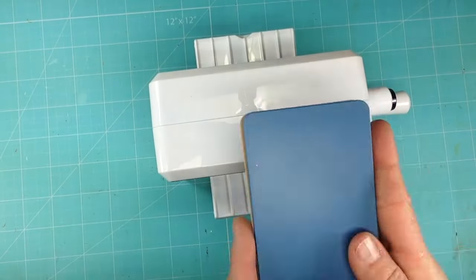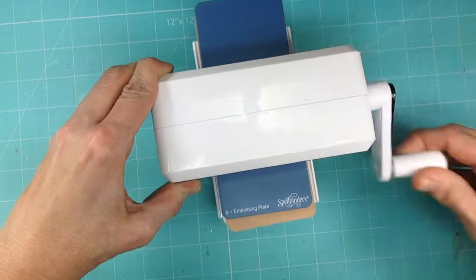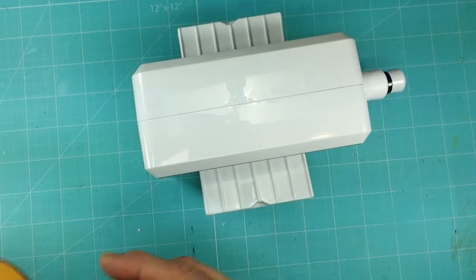Next step is to emboss the balloon. I'm taking the die and I'm using the embossing mat this time and easily rolling it once again through the machine.